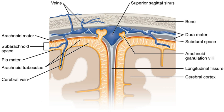The dura mater is a thick, durable membrane, closest to the skull and vertebrae. The dura mater, the outermost part, is a loosely arranged, fibroelastic layer of cells, characterized by multiple interdigitating cell processes, no extracellular collagen, and significant extracellular spaces.